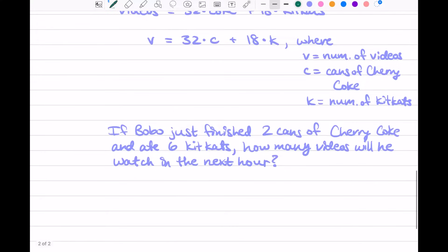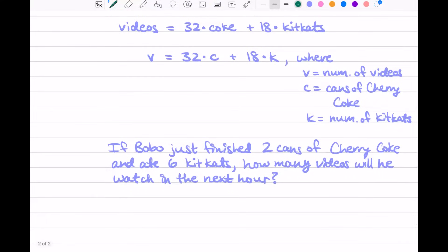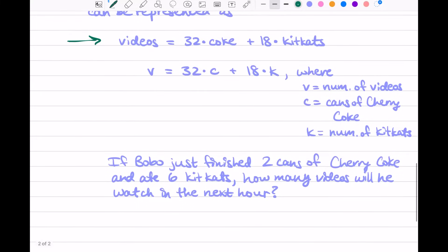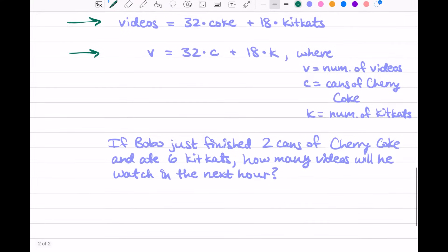So the question is, given the Cherry Coke that he drinks and the Kit Kats he eats, how many videos will he watch in the next hour? Well, we're given an equation here that represents how many videos he watches in the next hour, given how many Cokes and Kit Kats he has. So let's go ahead and rewrite that. You could use either version here—writing it out as words can be helpful and easy to understand, or you could write it as variables, just the one letter. Let's go ahead and write it as the word. Always helpful to rewrite an equation that you're given.